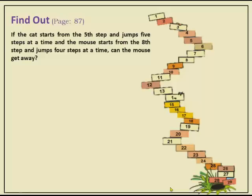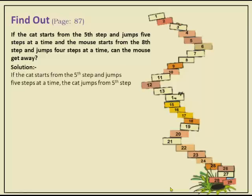Next problem: find out if the mouse can get away if the cat starts from the 5th step and jumps 5 steps at a time, while the mouse starts from the 8th step and jumps 4 steps at a time. The cat is on the 5th step and jumps 5 steps, so it will land on the 10th step.